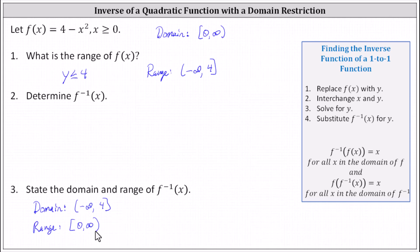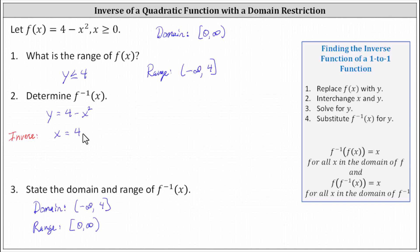To determine f inverse of x, we begin by replacing f of x with y in the original function, which gives us y equals four minus x squared. To find the inverse, we now interchange x and y, which gives us x equals four minus y squared. Now we need to solve this equation for y, so we add y squared to both sides and subtract x from both sides, which gives us y squared equals four minus x.